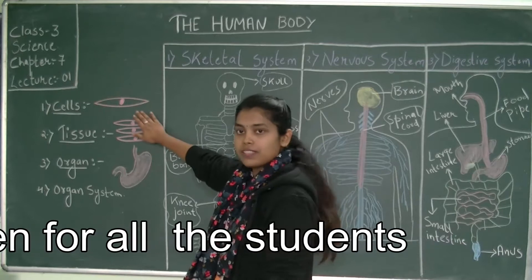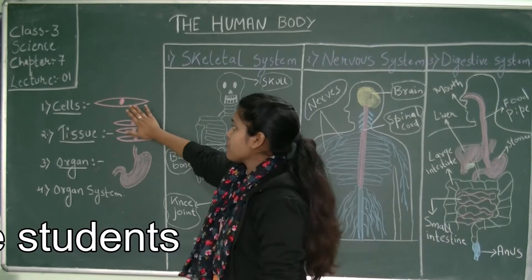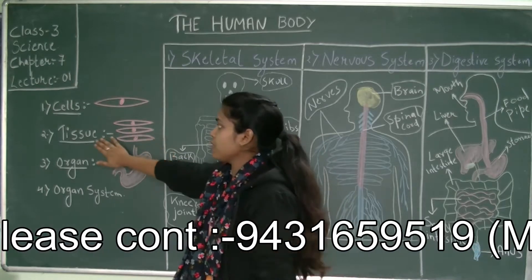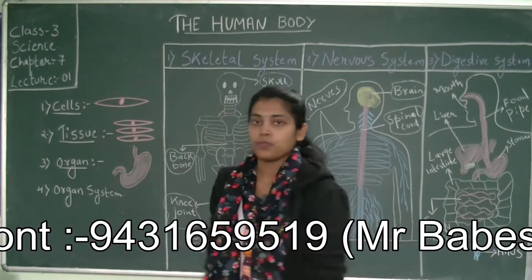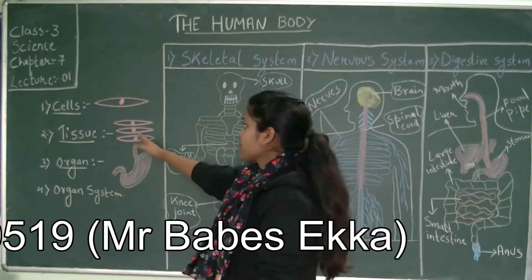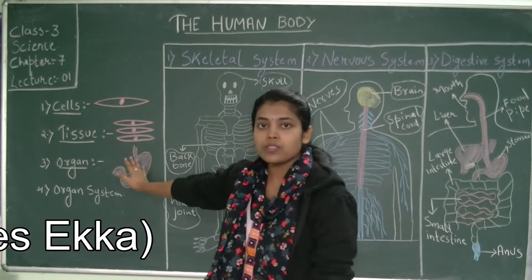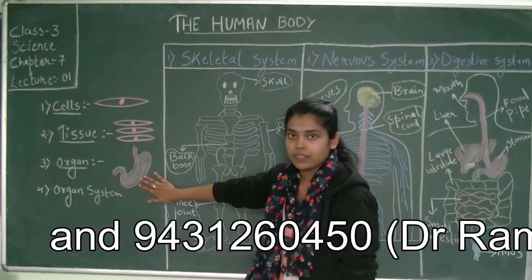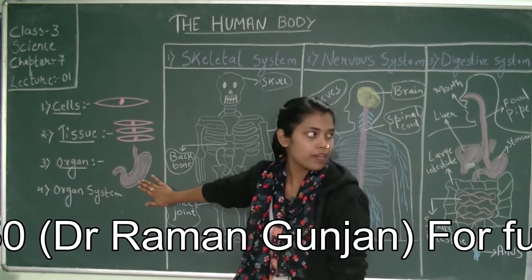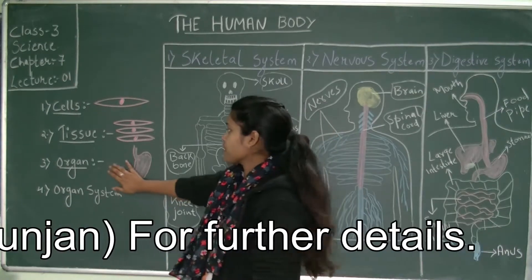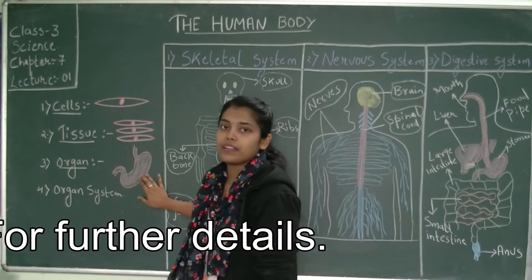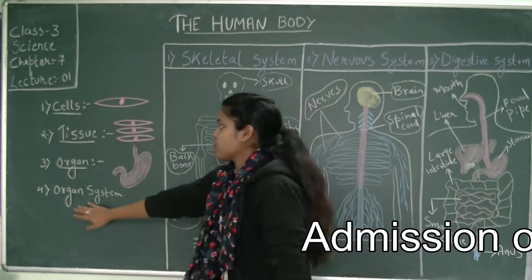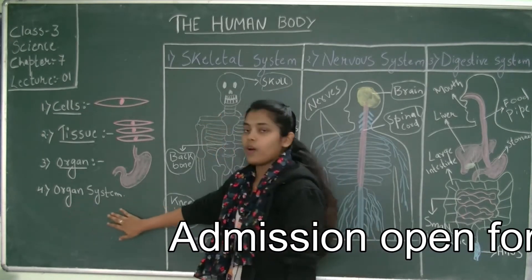Many cells of the same kind join together and give rise to a tissue. See here — this is a single cell, and same kind of cells joined together give rise to a tissue. Now same kind of tissues join together and give rise to an organ. This is the picture of a stomach, which is an organ.